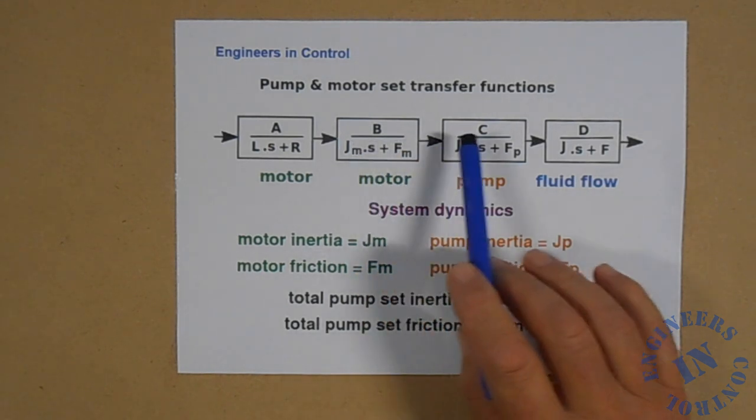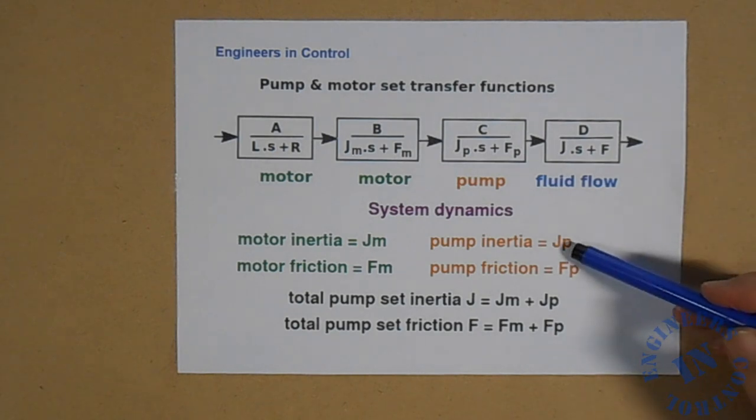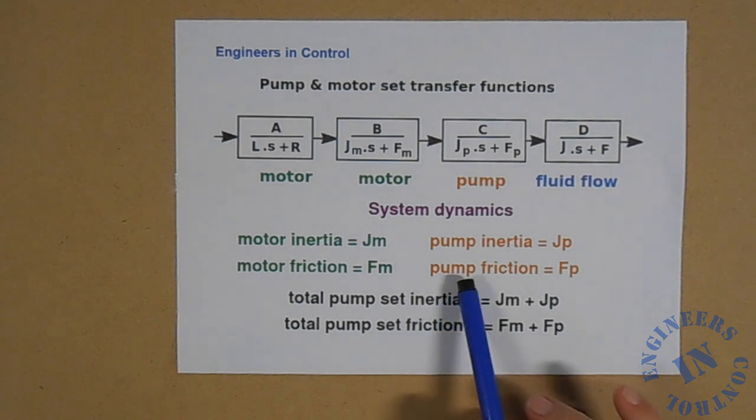So we can combine the motor and the pump dynamics together because they are so tightly coupled. This gives us Jm plus Jp for the inertia and the friction Fm plus Fp for the friction of the combined set. So the total pump set inertia J is Jm plus Jp and the total pump set friction F is Fm plus Fp. Finally we have the inertia and friction of the fluid that is being pumped. Now the fluid is not directly coupled to the pump and so behaves independently. So we have a Js plus F of the fluid as well.